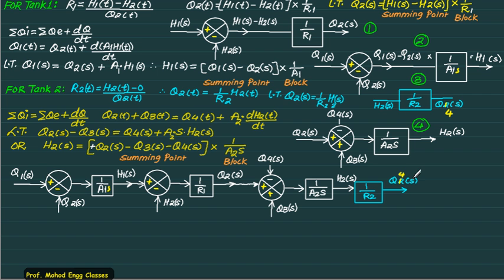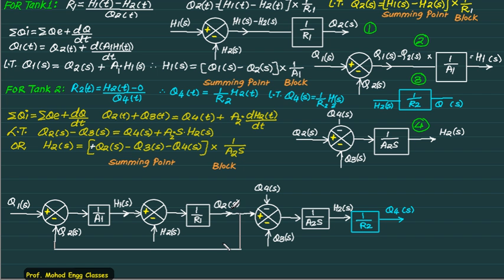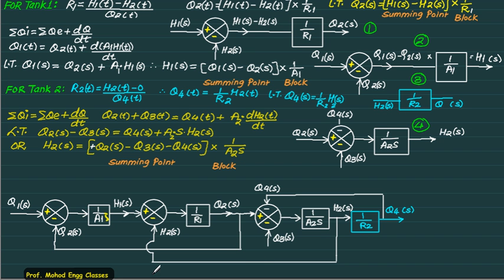The last block is connected so that input is Q1 and output is Q4. Q2 is fed back and connected at the appropriate summing point. H2 is also fed back — there is a unity feedback here. Q3 and Q4 are also connected to their respective summing points. H2S is taken from where it is generated and fed back to the R1 block. This is also a unity feedback system, and finally Q4 is connected to complete the block diagram.